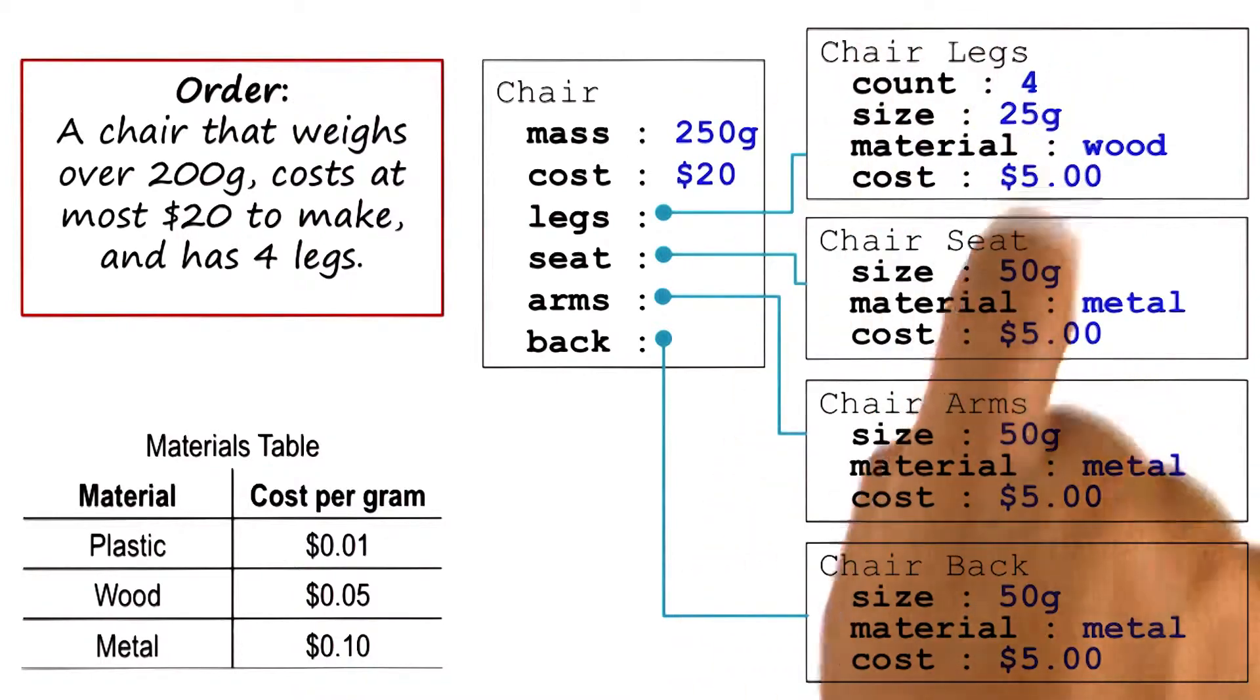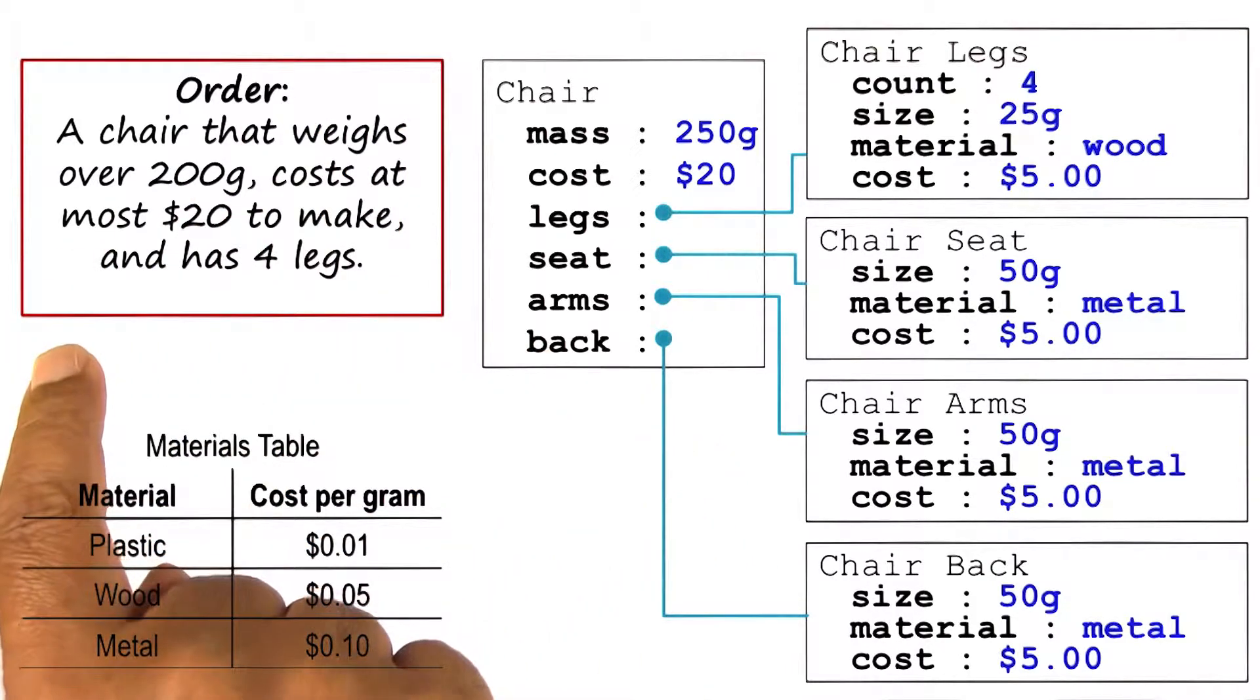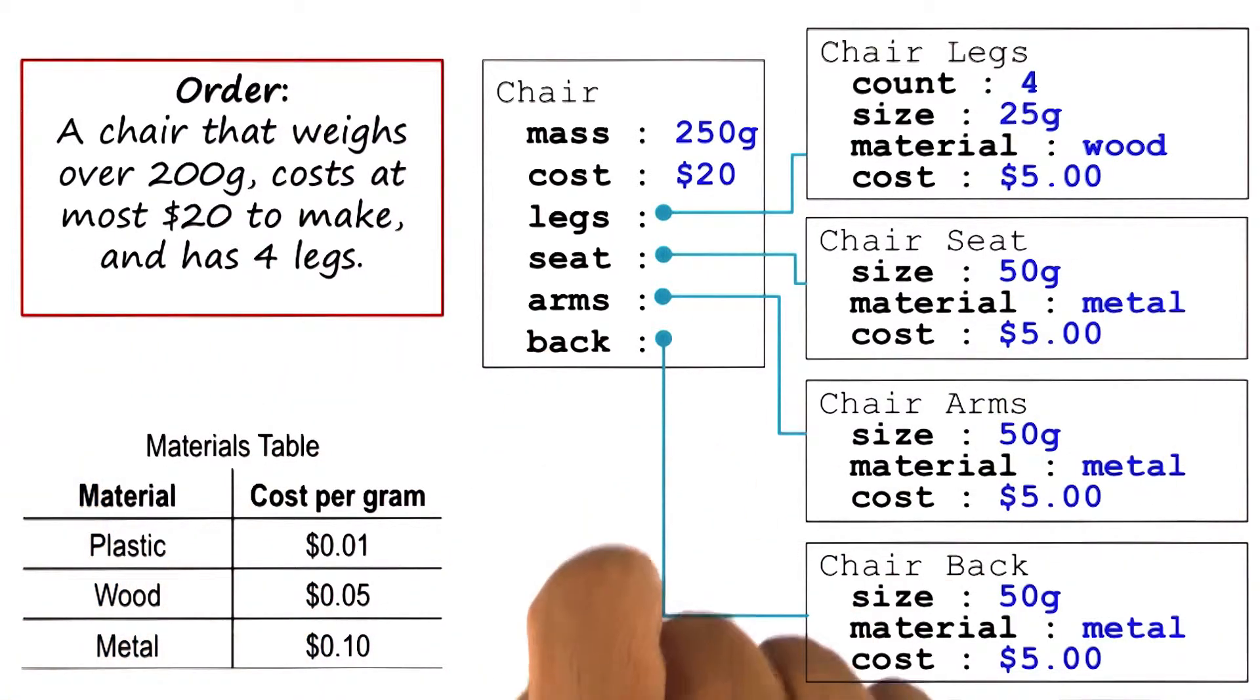Given the specific values we assign to the variables of each of the components, we can now compute whether the constraints given in the input specification are satisfied. In this particular example, both the mass and the cost of the chair satisfy the input constraints.